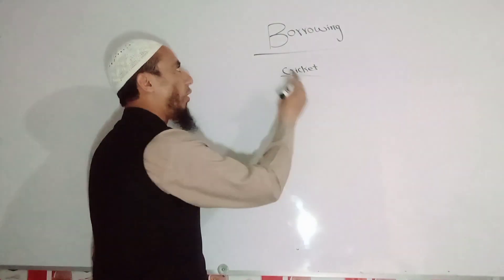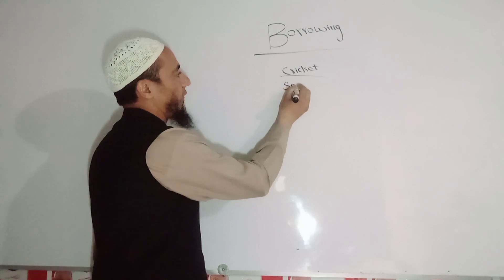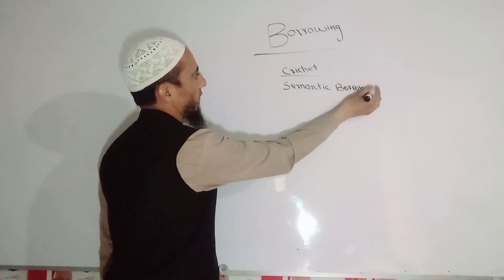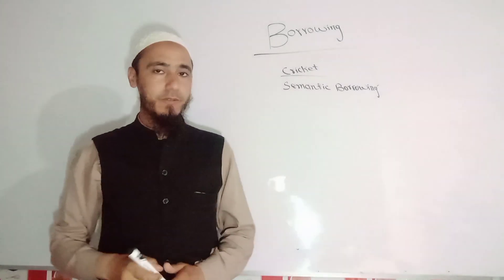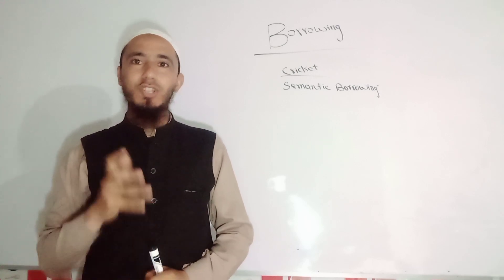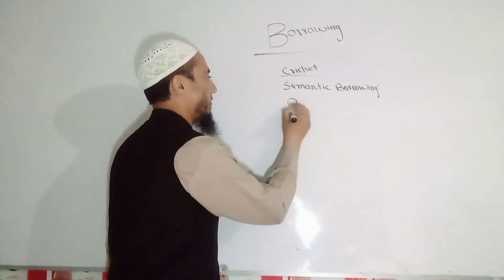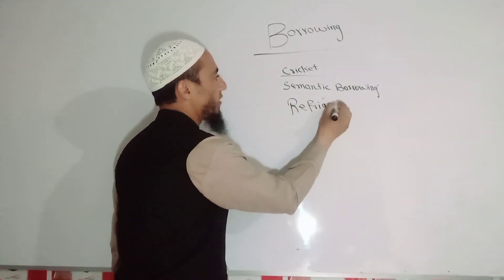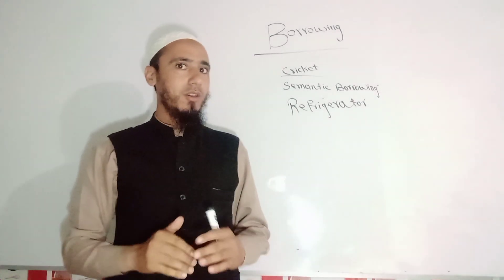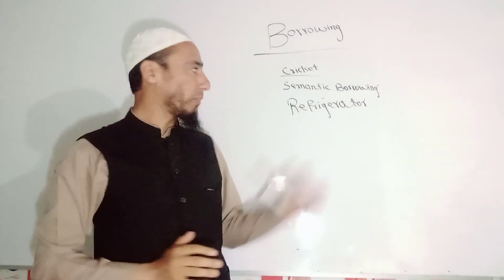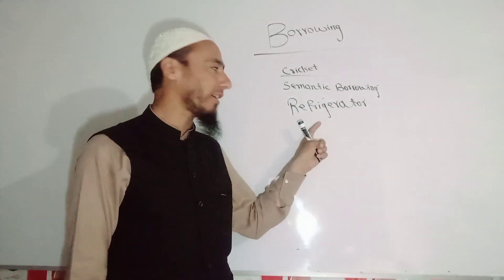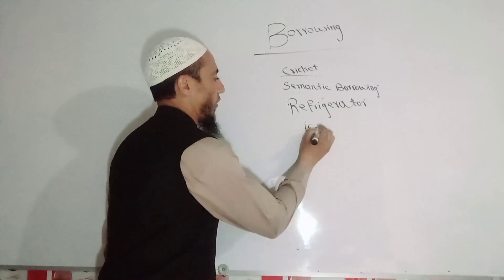Another form of borrowing is semantic borrowing. What is meant by semantic borrowing? Semantic borrowing means that only the meaning of a word is borrowed. Take the example of 'refrigerator.' This word is borrowed by the Chinese language, but the word itself is not borrowed — only the meaning of this word is borrowed. In Chinese, the refrigerator is known as 'ice box.'